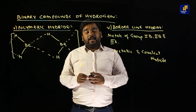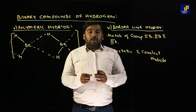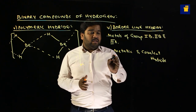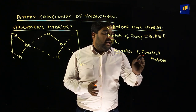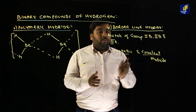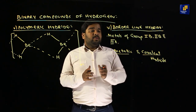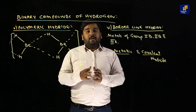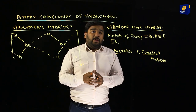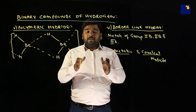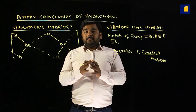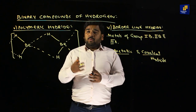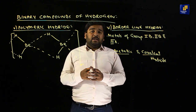The last type is borderline hydride. Borderline hydrides have characters between metallic hydride and covalent hydride. They are formed by members of Group 1B, 2B, and Group 3A.